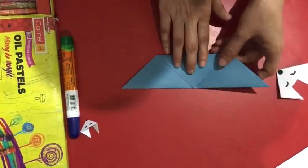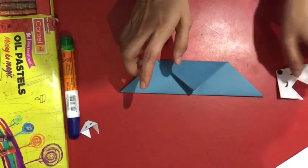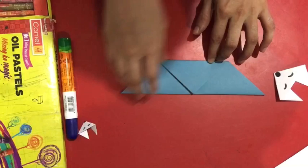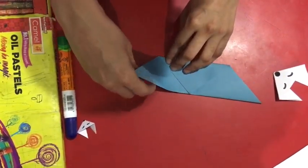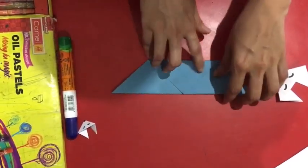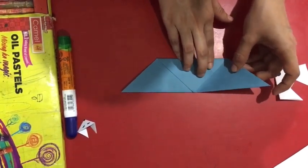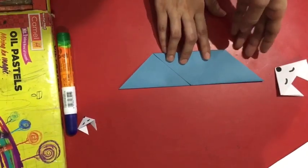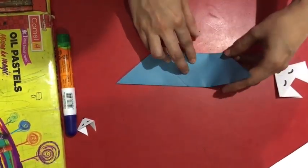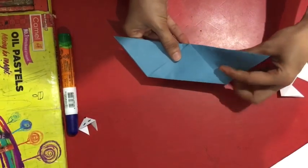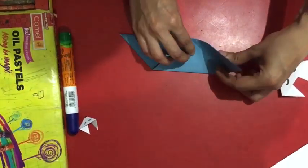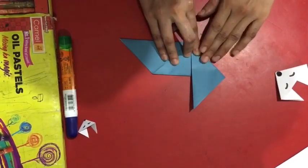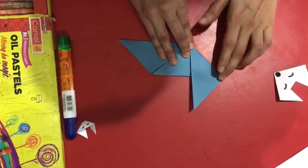The third step is to make fox ears. To make fox ears, you need to fold my left corner to your side. Again press with your fingers.